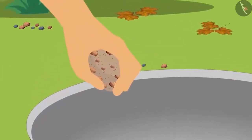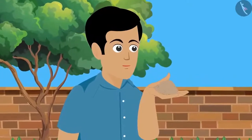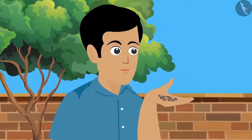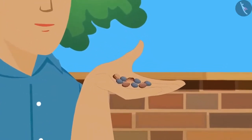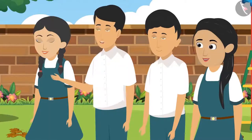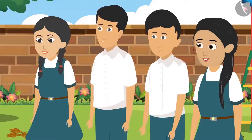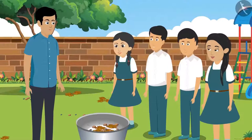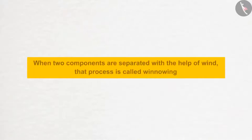Rohit Bhaiya pulled out some pebbles from the tub; along with the pebbles, some sand also came into his hand. He opened his fist, blew on his hand, and all the sand flew away while the pebbles remained. This also happens when wheat grains are cleaned — all the lighter particles fly away. When two components are separated with the help of wind, that process is called winnowing.